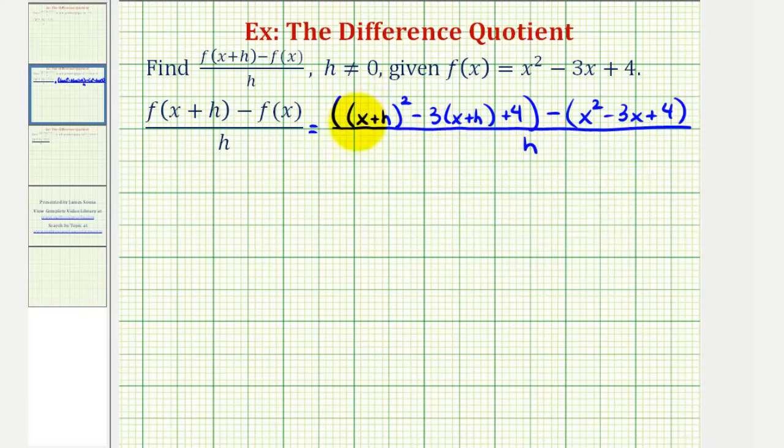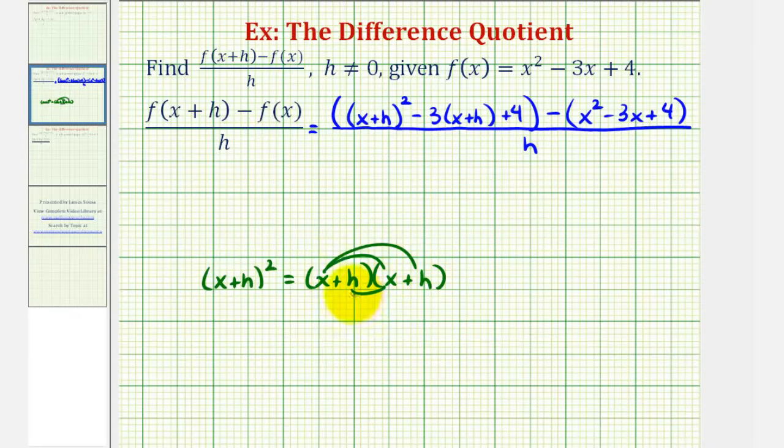Now we're going to multiply out f of the quantity x plus h, so we'll start by squaring the quantity x plus h. There's no shortcuts here. If we want to square the quantity x plus h, we'll have two factors of x plus h. When multiplying these binomials, we'll have four products: one, two, three, and four.